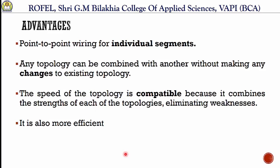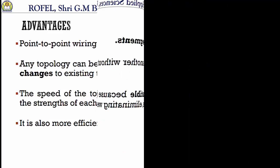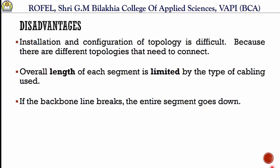The last advantage is that it is more efficient and more reliable. Now the disadvantages of star-bus topology: first, installation and configuration of the topology is difficult because there are different topologies that need to be connected. Second, the overall length of each segment is limited by the type of cabling used — for example, the backbone cables in bus topology are limited, so only a limited number of star topologies can be connected. Third, if the backbone line breaks, then the entire segment goes down.